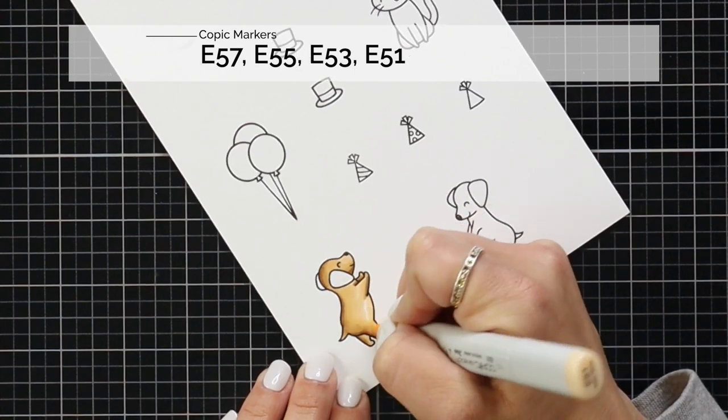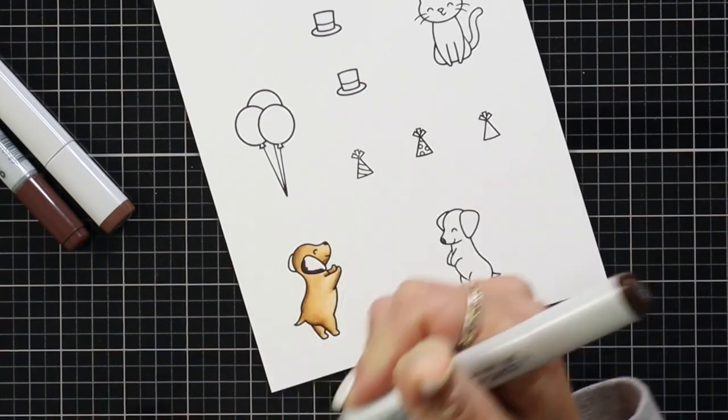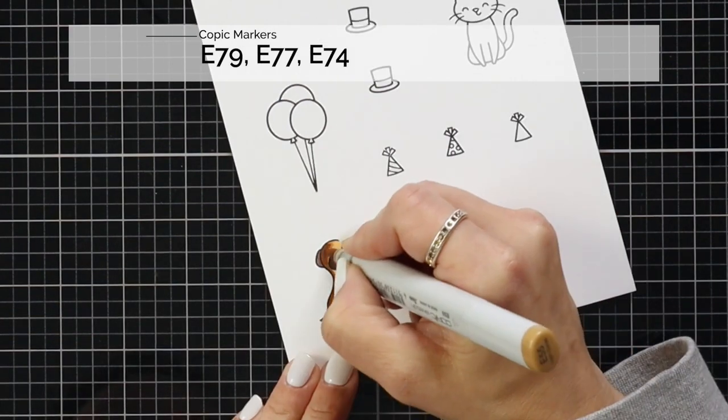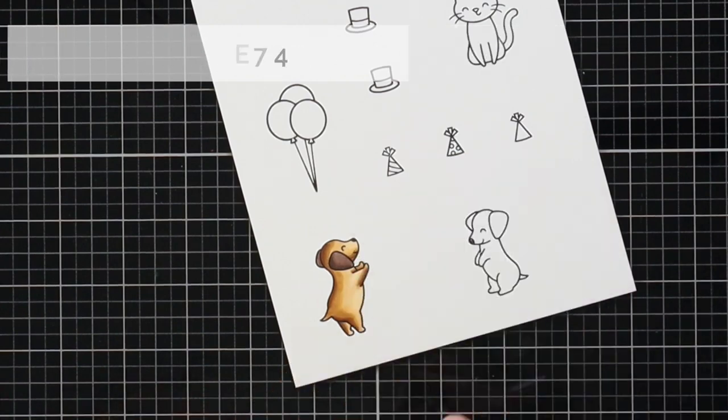All of these images were stamped on the 80 pound white cardstock with Lawn Fawn's Jet Black ink and coloring in with my Copic markers. I have all of those colors listed at the top of the screen here for you.